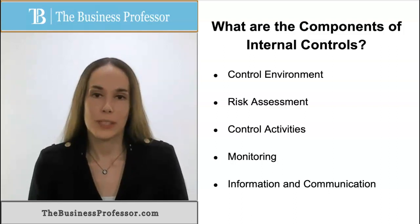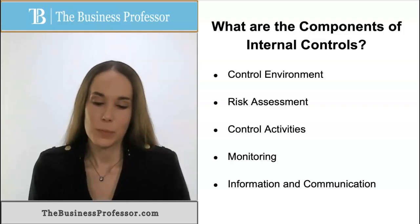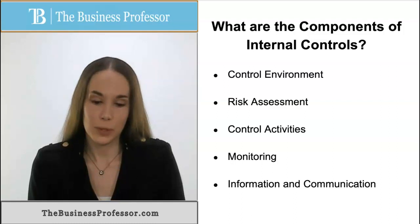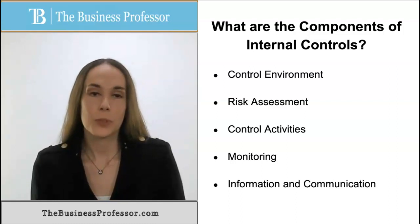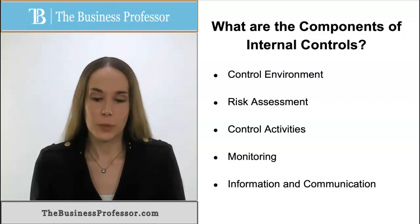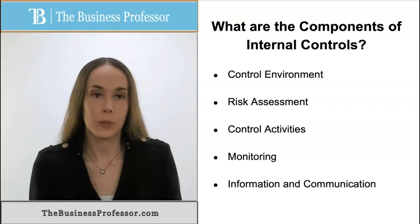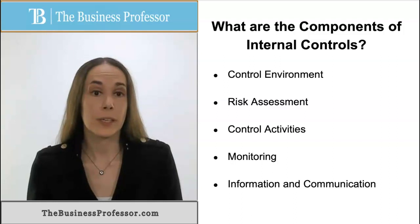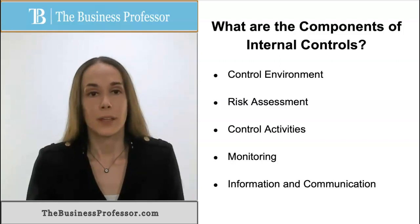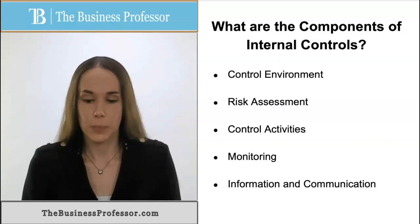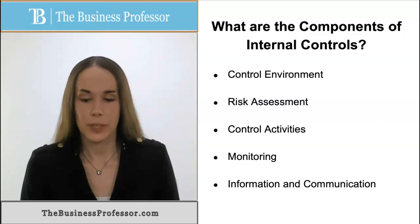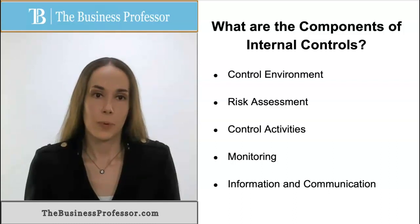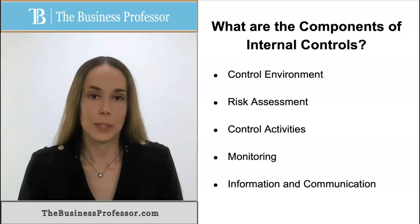What are the components of internal controls? First, we have control environment. This refers to the overall situation of a company. It can include things like tone at the top, so management's attitude, the structure of the organization, the structure and attitude of the board of directors, and their financial reporting policies and procedures.